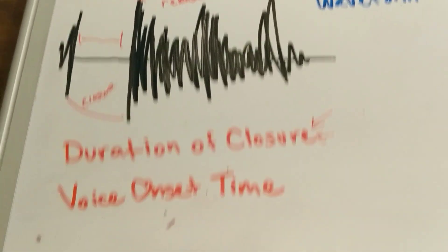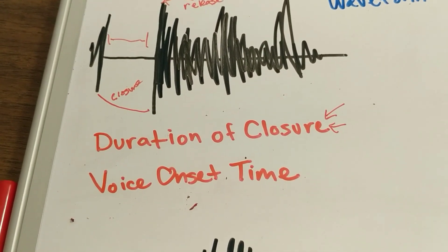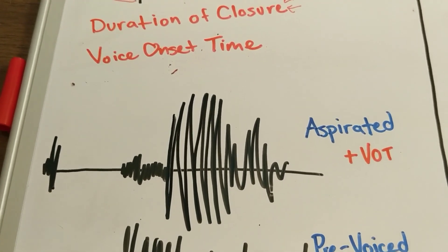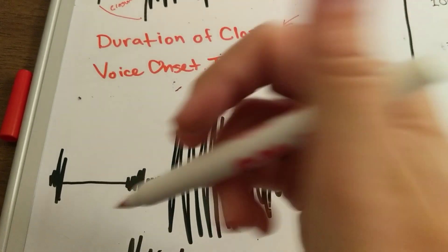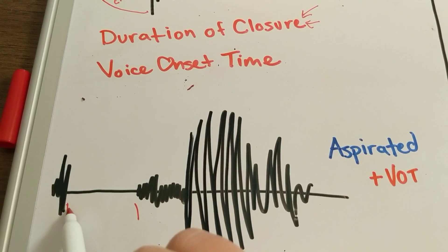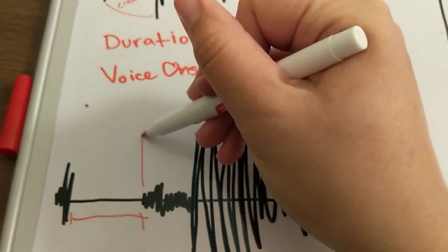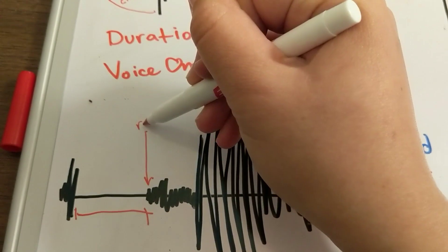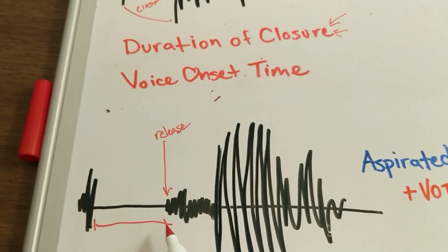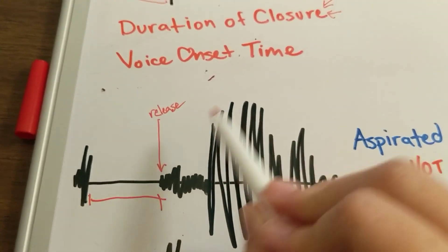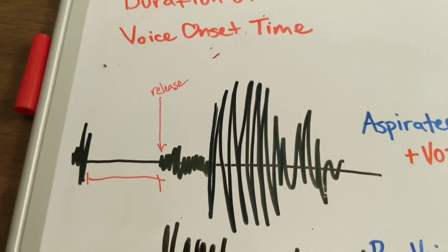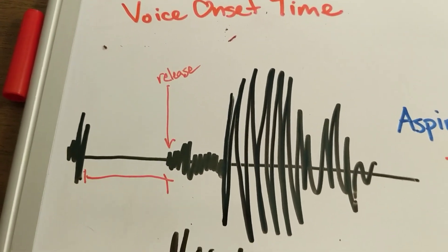The second time variable is called the voice onset time. The voice onset time has to do with, after you've released the air, how much time is there between the release and when you start making the vowel sound. In this waveform, we've got a closure that lasts from here to here. Then we have a release, and in between the release and this louder section is when you've released your vowel — when your voice box is vibrating again. It's much louder in terms of the amplitude.